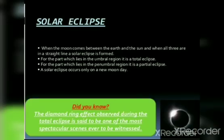Let's learn about solar eclipse. When the moon comes between the earth and the sun, and when all three are in a straight line, a solar eclipse is formed. For the part which lies in the umbral region, it is a total eclipse. For the part which lies in the penumbral region, it is a partial eclipse. A solar eclipse occurs only on a new moon day.